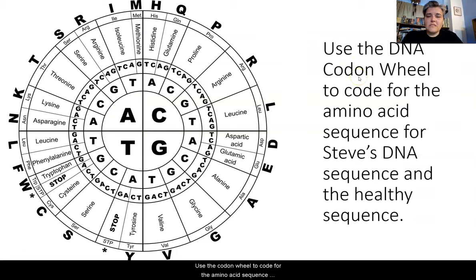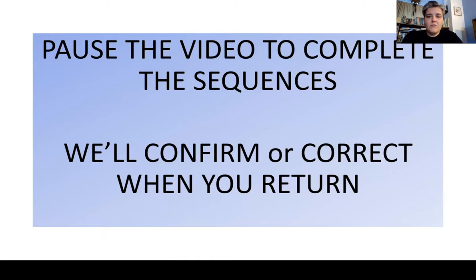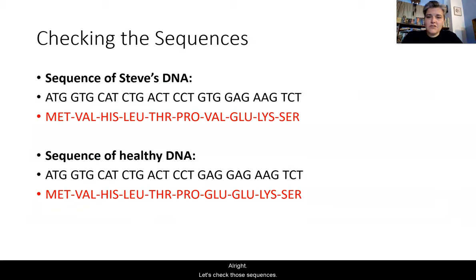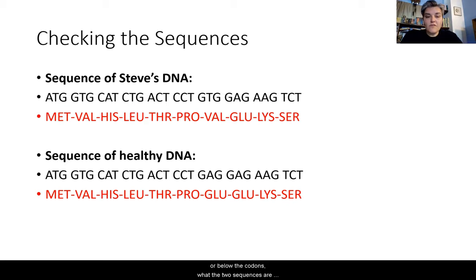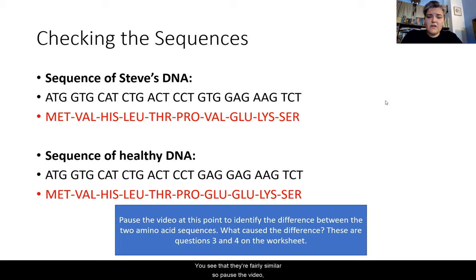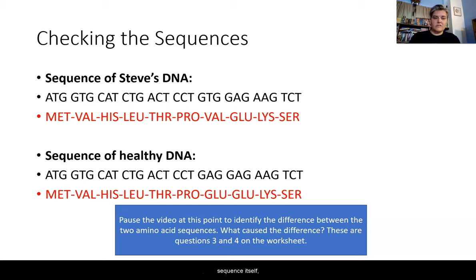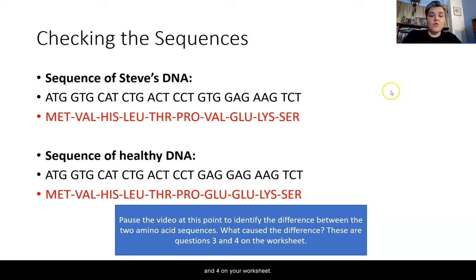Use the codon wheel to code for the amino acid sequence for Steve's DNA and then for the healthy sequence of DNA. Pause the video at this time to complete those sequences — we'll do a confirmation or correction when you return. After checking those sequences, pause again to identify the difference between the two amino acid sequences and what caused that difference. This lines up with questions three and four on your worksheet.